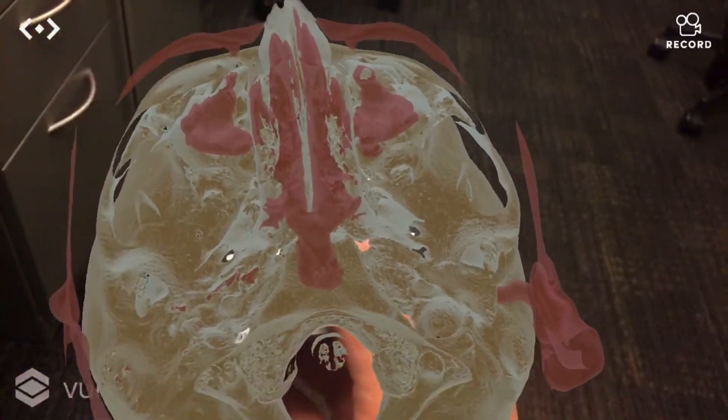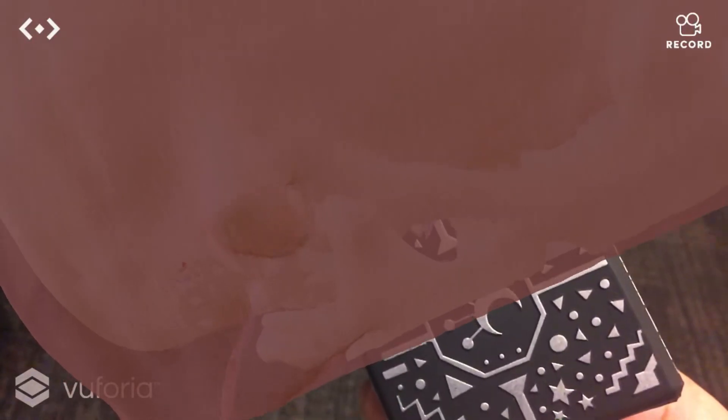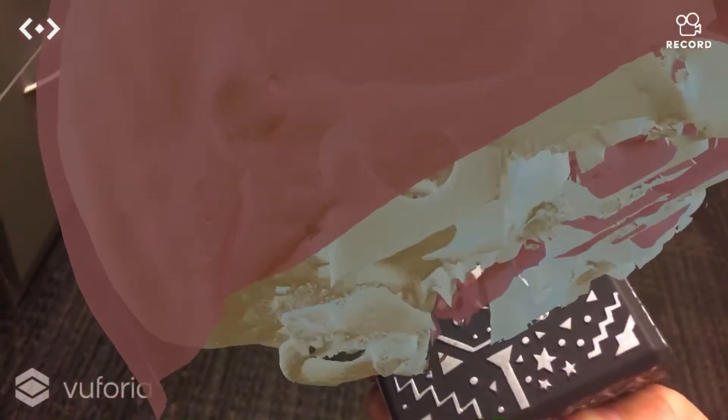we can see then the abnormal side with the abnormal appearing ear, the pinna, looking different than the contralateral side here.